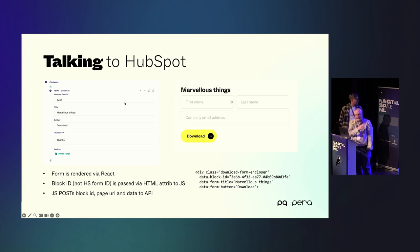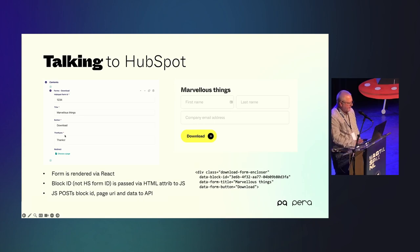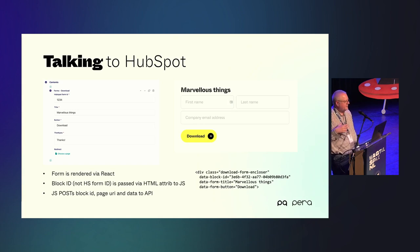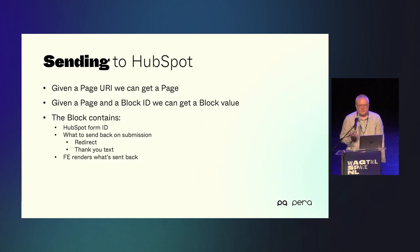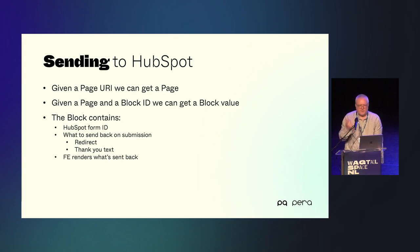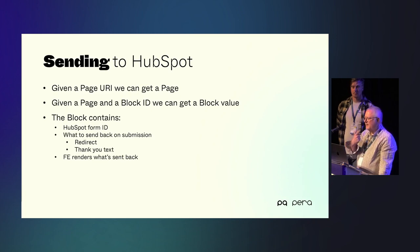On the left is the UI from Wagtail and on the right is how it's rendered on our website. HubSpot forms all have a unique identifier — basically a UUID. We record that UUID because we might have multiple forms on a page. We send the block ID to the front end; the block ID lets us get back to the HubSpot ID. Given a page URI, we can get a page object, run along all the blocks in the page, find the right block ID, figure out the HubSpot form ID, and send that back to HubSpot.